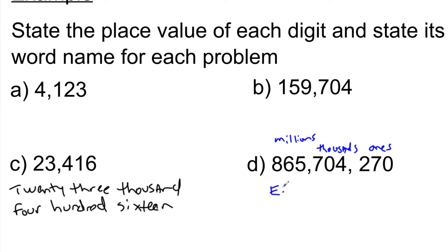And then this is the ones group, which we don't attach a label to. So we'll say, in this case, again, if I'm writing this out, 865 million. This is going to be a little long of a name, but that's okay. 704,000, because this middle group is in the thousands. 270, and I'm just going to write that out. So this is really all we're looking at at the beginning.